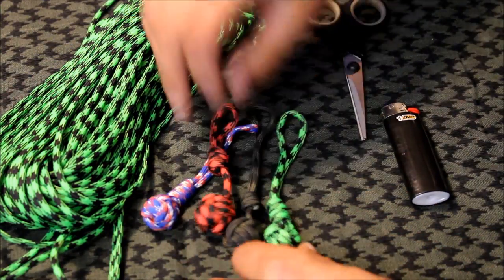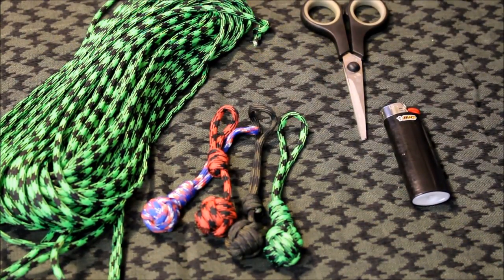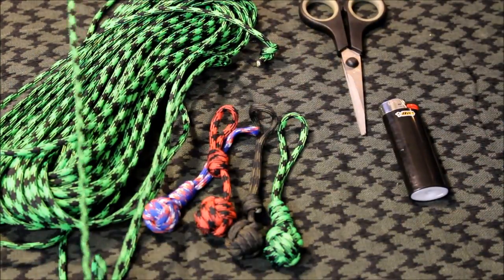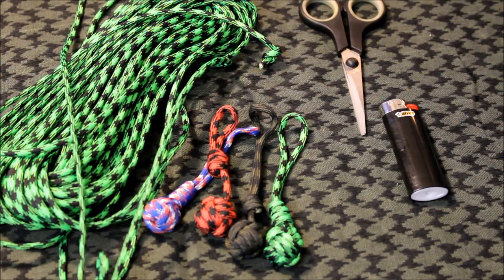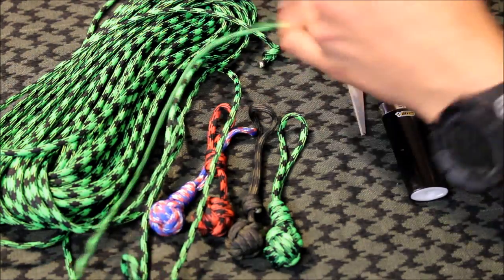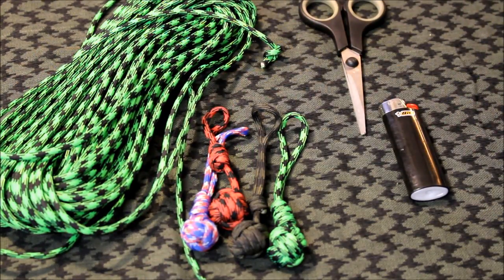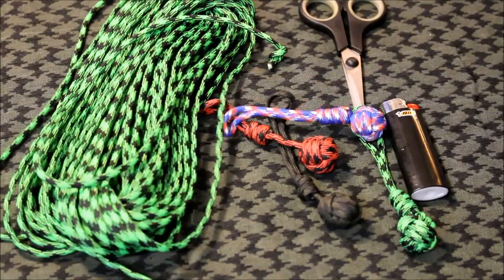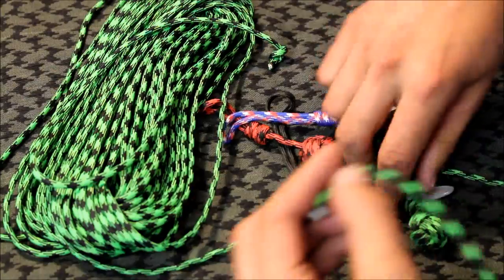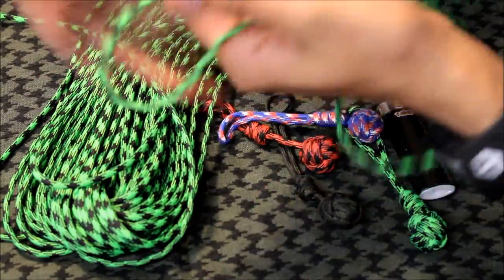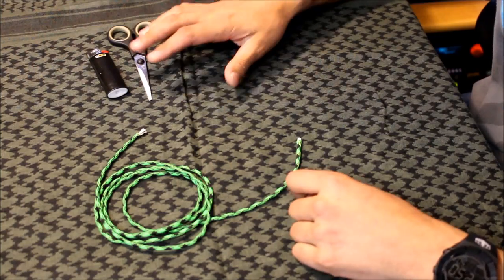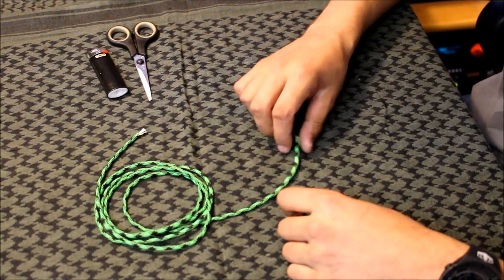Now, the way I make these might be a little different or very similar to the way you've seen them made before, but basically I start off with too much cord. I start off with a good three and a half to four feet, four foot piece of cord, which I'll go ahead and cut that now. There will be some extra left over, which is no big deal. Alright, but I got my cord cut now.